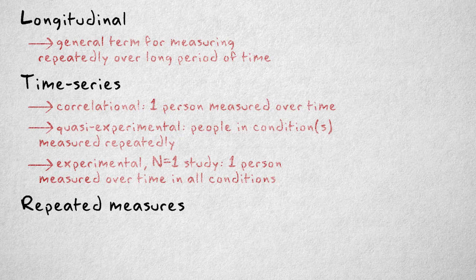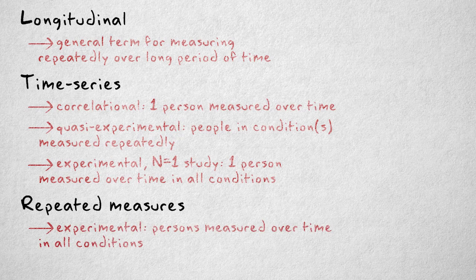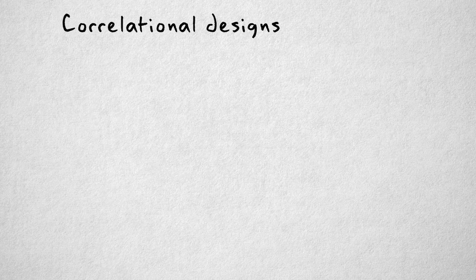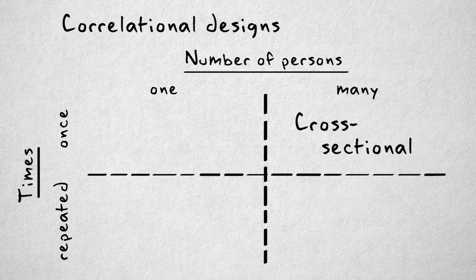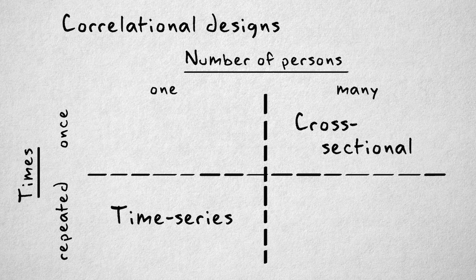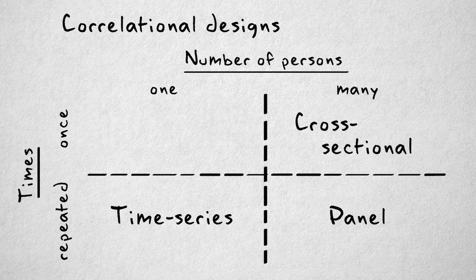The term repeated measures implies an experimental study, where at least one independent variable was manipulated or selected. To summarize, in correlational designs, researchers distinguish three types of studies that differ on the dimensions of individuals and time: cross-sectional designs concern the measurement of many individuals on many variables at one point in time; time series designs follow only one individual over several points in time; and panel studies combine both dimensions by considering a group of the same individuals at several points in time.